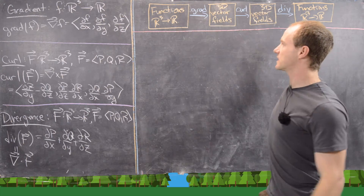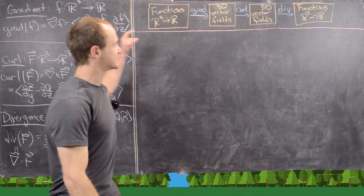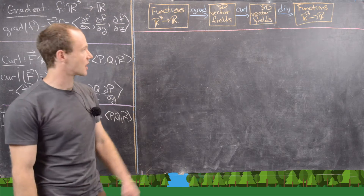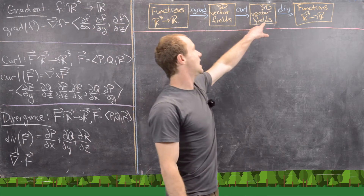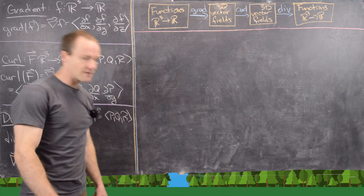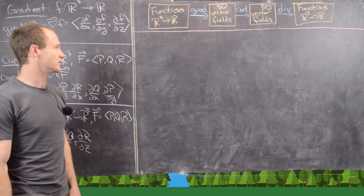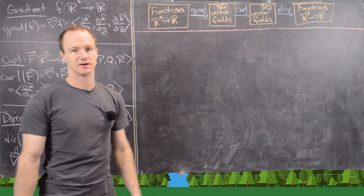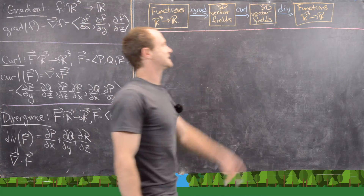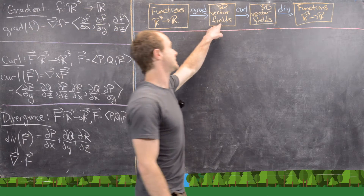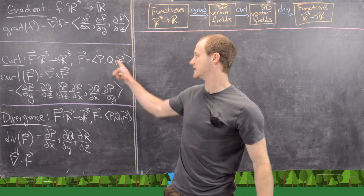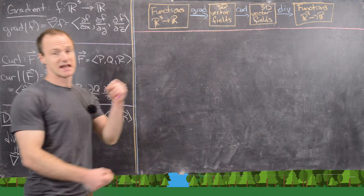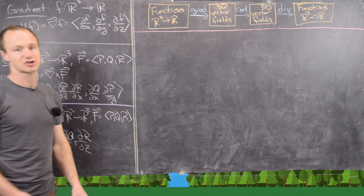Here is the picture that is really important to think about. We have a big long string: on the extreme left, functions from R3 to R; then three-dimensional vector fields; another set of three-dimensional vector fields; and then finally functions from R3 to R. The gradient takes us from functions to three-dimensional vector fields. The curl stays within three-dimensional vector fields — it inputs a vector field and outputs a vector field. Finally, the divergence takes in three-dimensional vector fields and outputs a function of three variables.